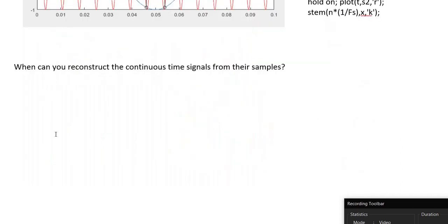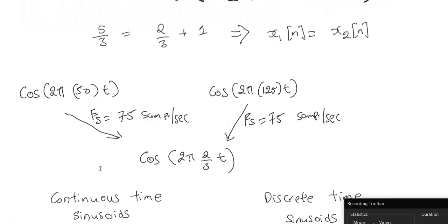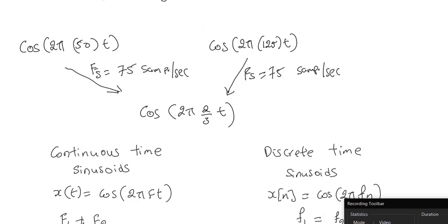This brings us to the question: when can you reconstruct the continuous time signals from their samples? Obviously, when two different continuous time signals give rise to the same discrete time signal, you cannot figure out which continuous time signal it was. So when sampling, there have to be some restrictions on the continuous time signal under which conditions you can get back the original signal. That brings us to the sampling theorem, which will be the topic of our next video.